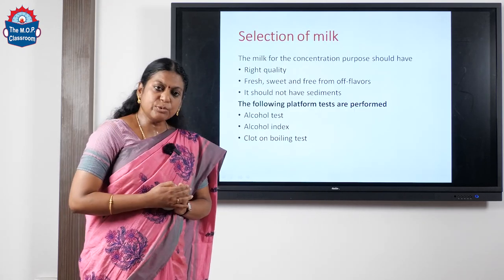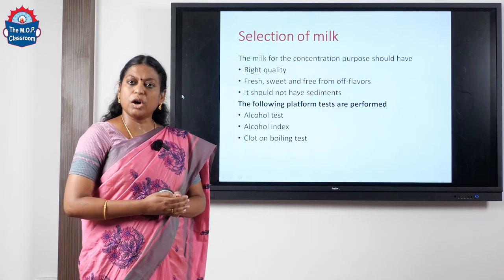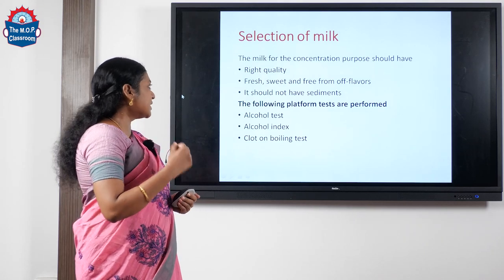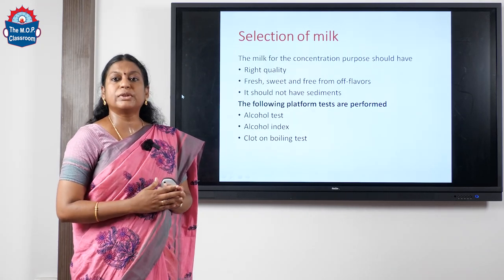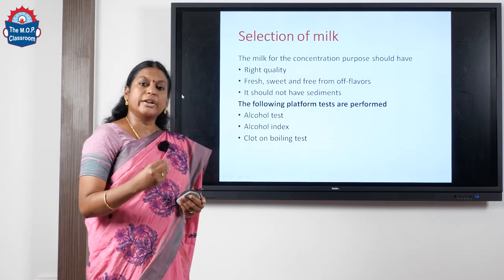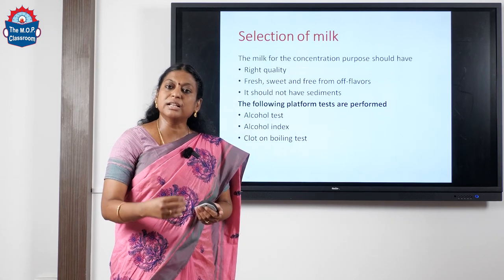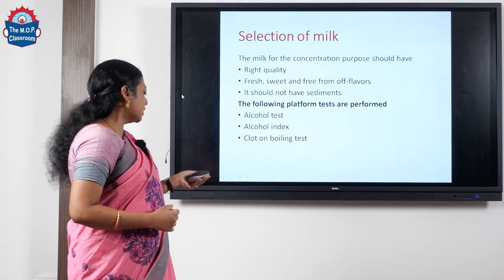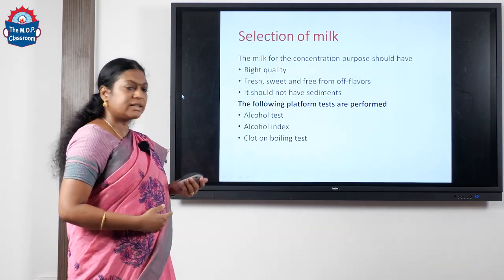Now let us move on to the selection of milk. We need a really high-quality grade-one milk for making our sweetened condensed milk. The milk should be fresh, sweet, and free from any off-flavors. So we usually go in for a platform test or quality analysis of the milk before considering it for making sweetened condensed milk.